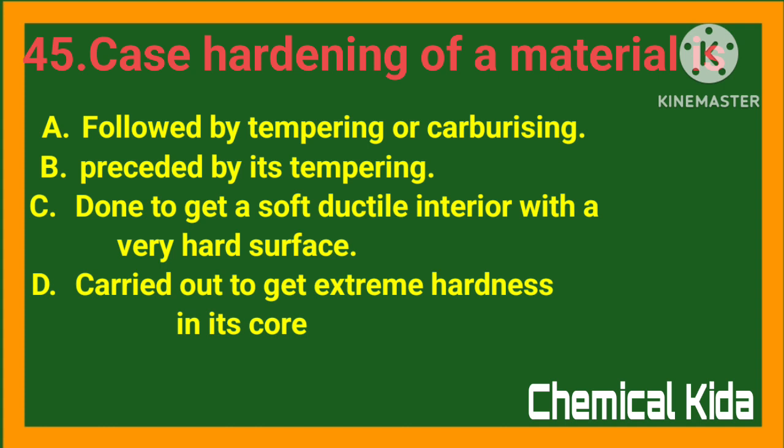Case hardening of a material is: a) followed by tempering or carburizing, b) preceded by tempering, c) done to get a soft core integrated with a very hard surface, d) carried out to get extreme hardness in its core. Answer: c) to get a soft core with a very hard surface.